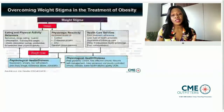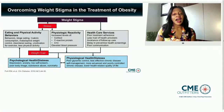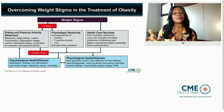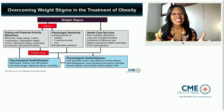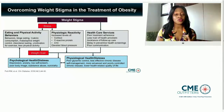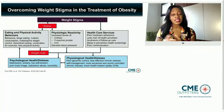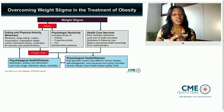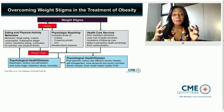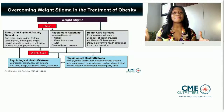What does this mean for healthcare services? There's poor treatment adherence, less trust of health providers, avoidance of follow-up care, delay in preventive health screenings, and poor communication. All of these issues then lead to weight gain, which causes psychological health distress — depression, anxiety, low self-esteem, poor body image, substance abuse, and even suicidality. That then leads to physiologic health distress: poor glycemic control, less effective chronic disease self-management, more advanced and poorly controlled chronic disease, and a lower health-related quality of life.